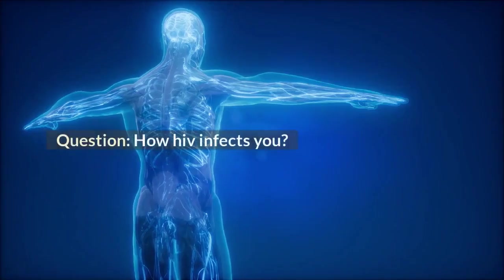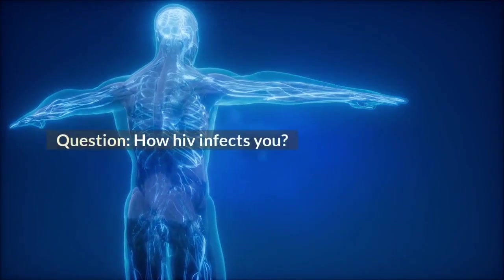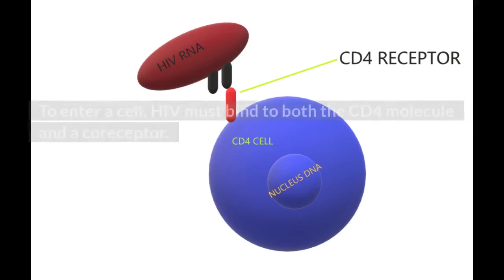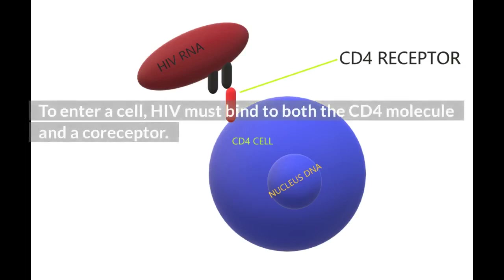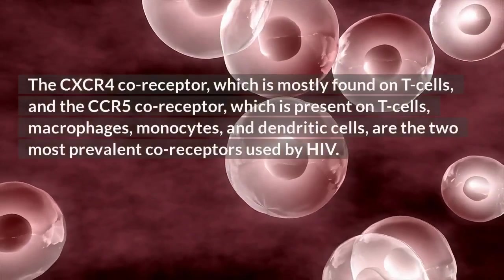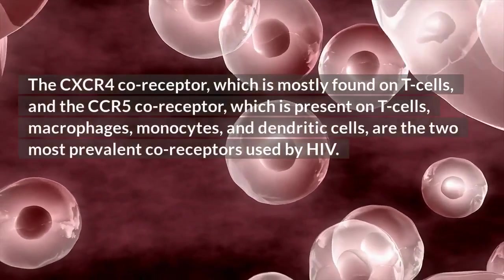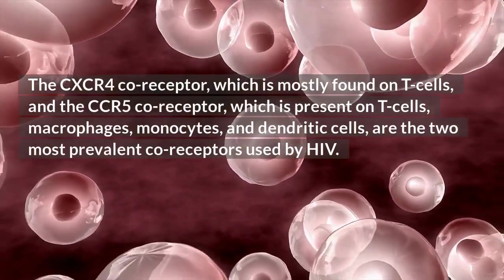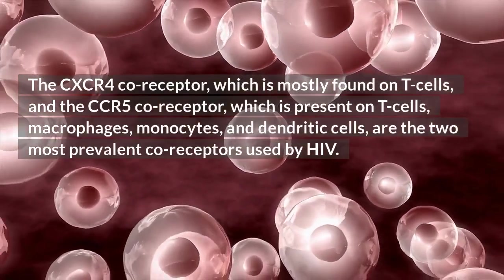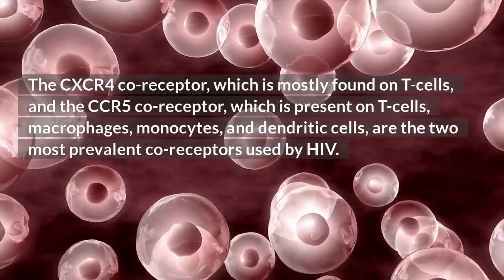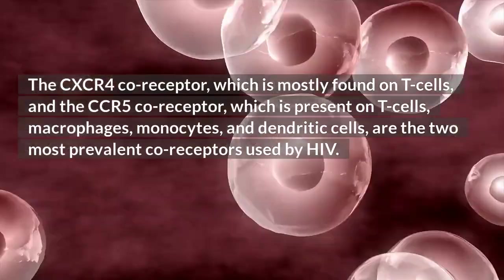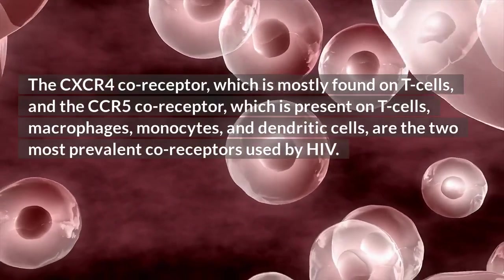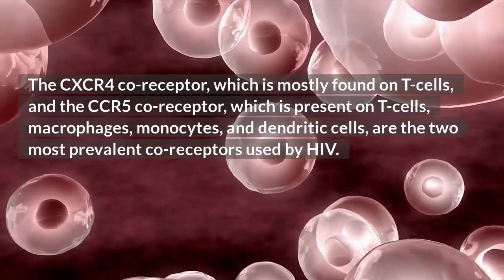How does HIV infect you? To enter a cell, HIV must bind to both the CD4 molecule and a co-receptor. The CXCR4 co-receptor, which is mostly found on T cells, and the CCR5 co-receptor, which is present on T cells, macrophages, monocytes, and dendritic cells, are the two most prevalent co-receptors used by HIV.